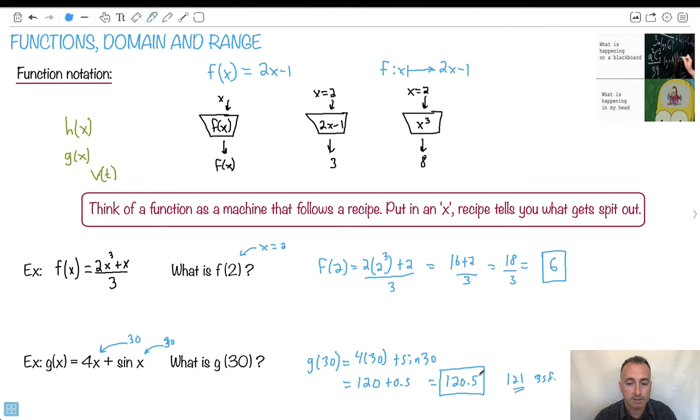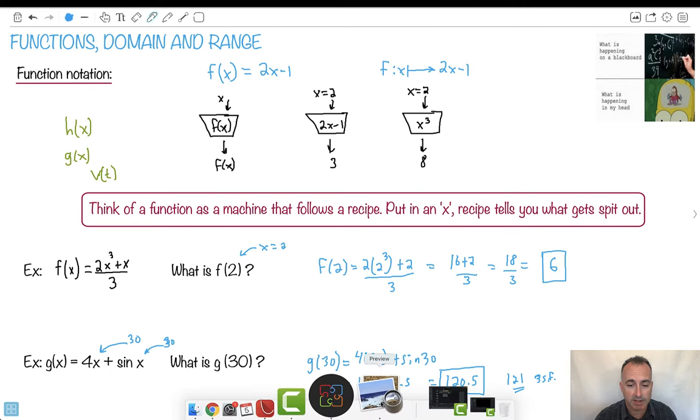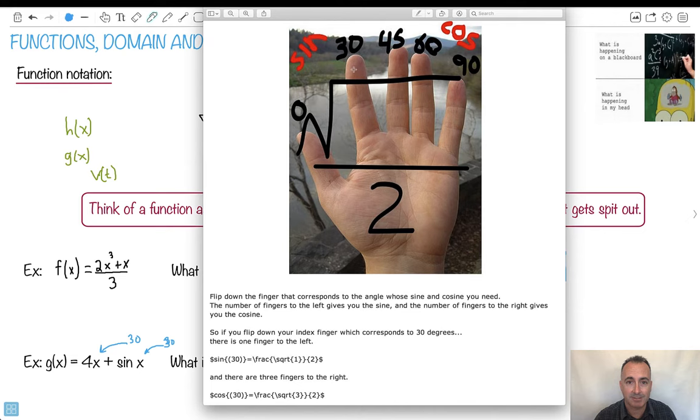You could also do sine of 30 by hand. There's lots of ways of doing this. There's a nice little trick a student showed me. If you want 30 degrees, you hold out your left hand with your thumb to the left. For 30 degrees, you put that finger down. Then you count the number of fingers to the left. There's one finger to the left, so the answer is square root of 1 over 2. Square root of 1 is just 1, so it's 1 half. This is awesome. Mind blown, maybe.